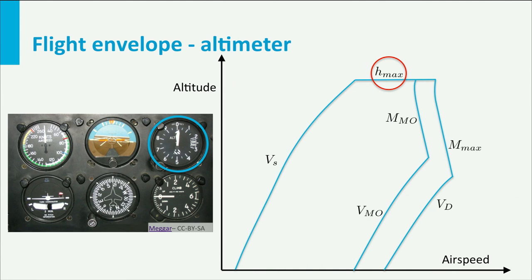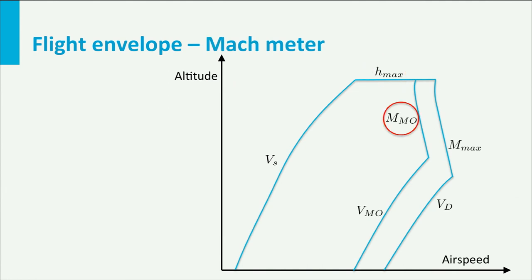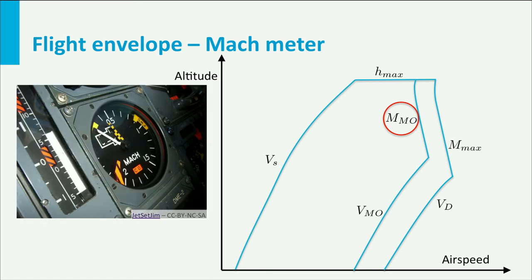The maximum operating Mach number. Aircraft which are able to fly in the transonic speed regime always have a Mach meter on board. The limit indicated here is a fixed Mach number and therefore also a fixed limit on the Mach meter. It is beyond the scope of this lecture to explain how this instrument works exactly. What I can say for now is that the Mach number can be determined from the pressure ratio of the dynamic pressure and the static pressure. The dynamic pressure is measured by the airspeed indicator and the static pressure by the altimeter.